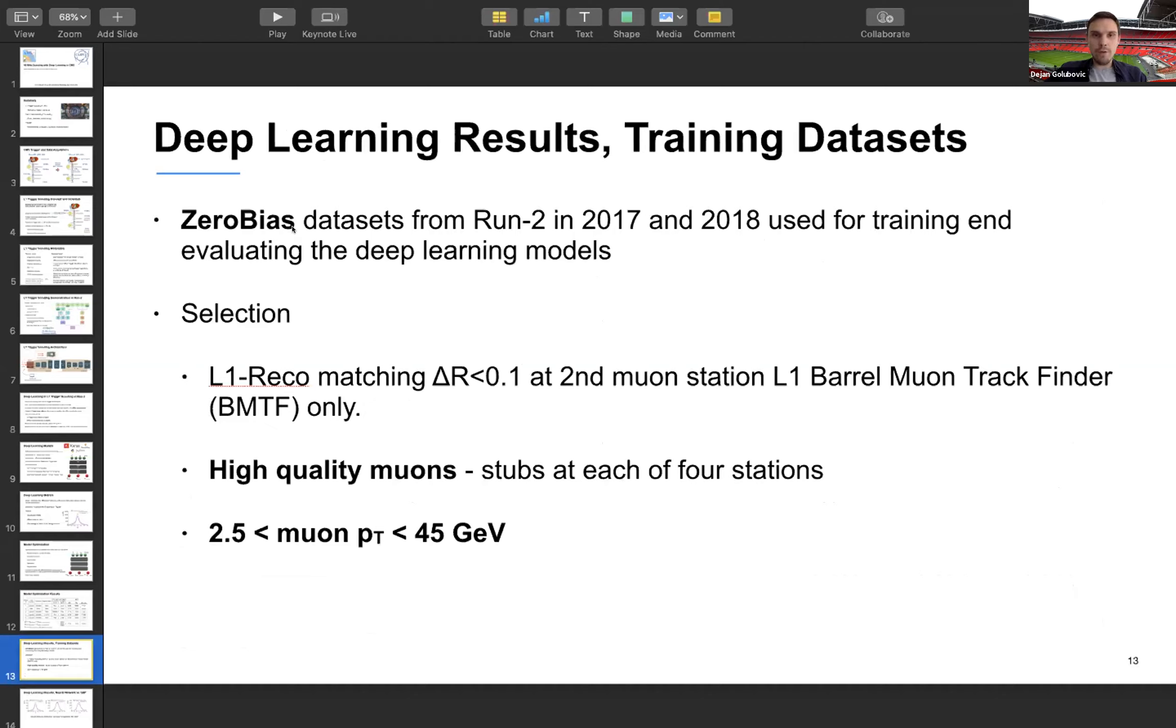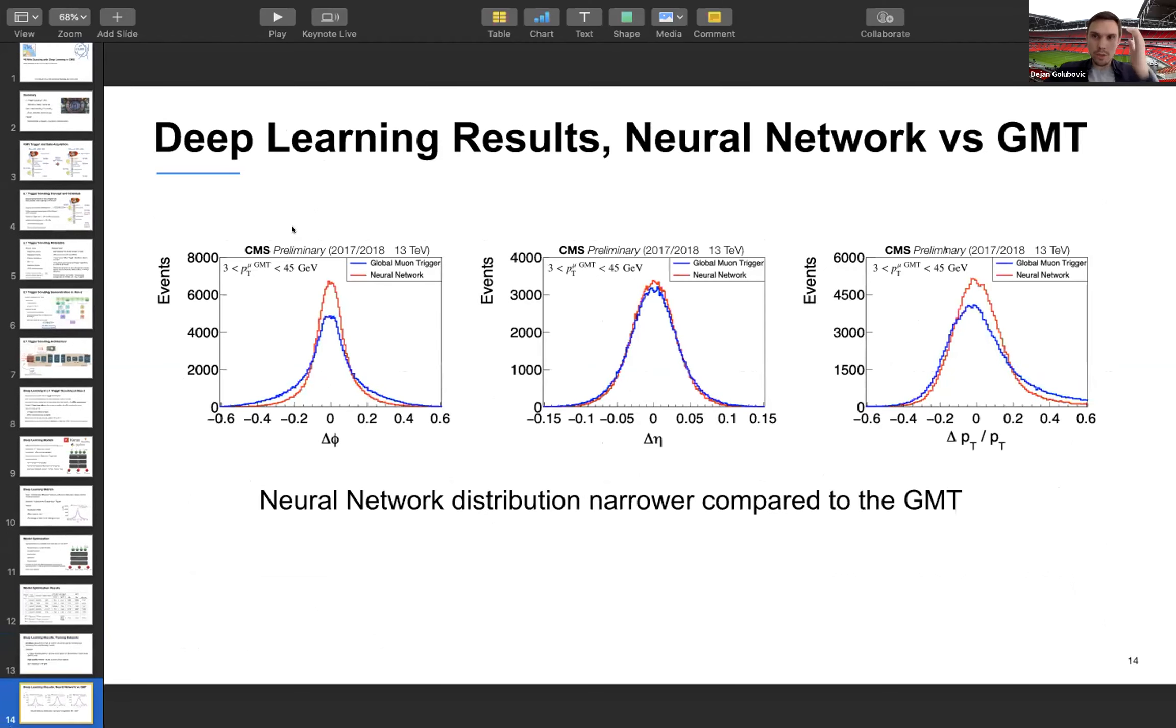For our training and evaluation we were using zero bias data sets from 2017 and 2018, and we were using high quality muons with stubs at each of the four stations and low pT muons because this is where scouting is most interesting. Here we see visually the results shown from the table. We see in blue the difference between global muon trigger and the offline and in red the difference between neural network and the offline reconstructed values. And we see that the neural network provides a significant improvement in terms of data concentrated in the smaller range in a narrow bridge. Those are the results on our test sets actually.